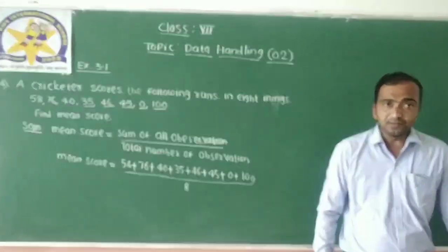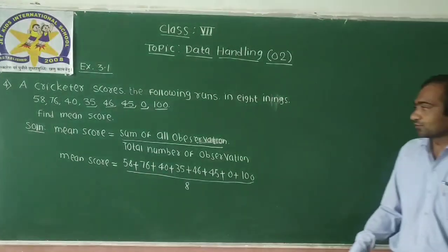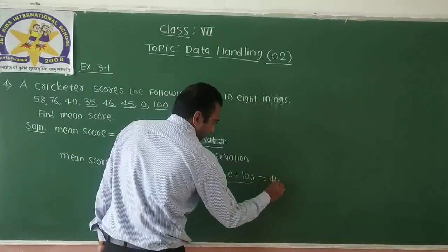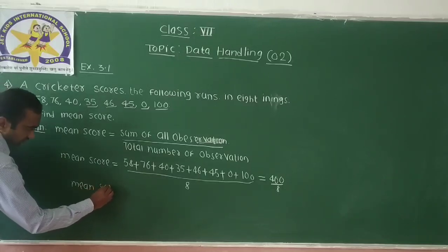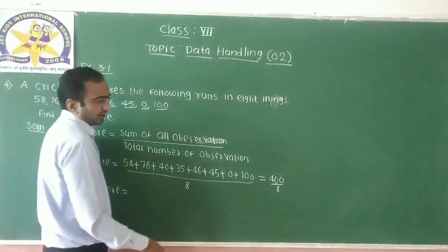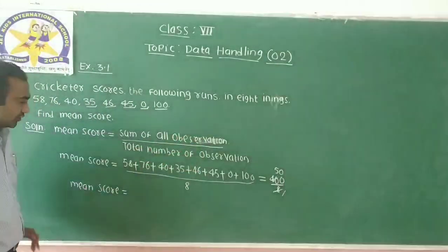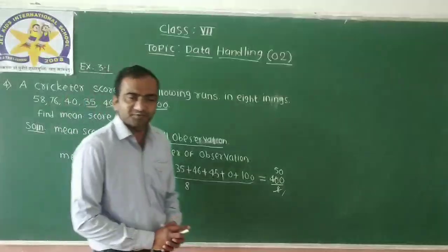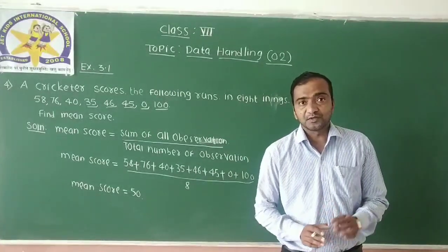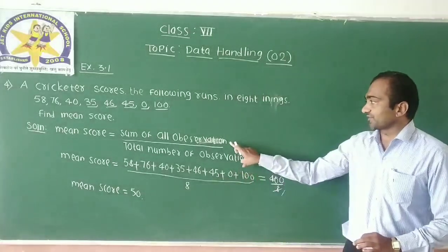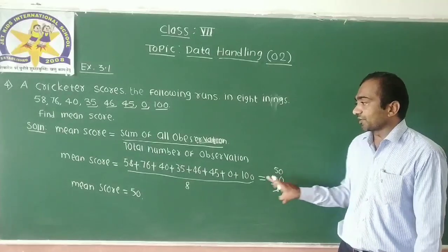The formula is: sum of all observations divided by total number of observations. The sum of all observations is 400, divided by 8. When you divide 400 by 8, you get 50. So the final answer is: mean score equals 50.